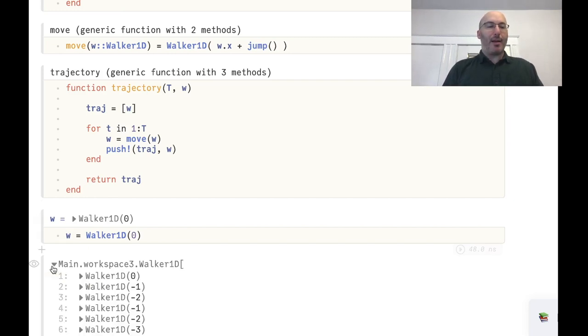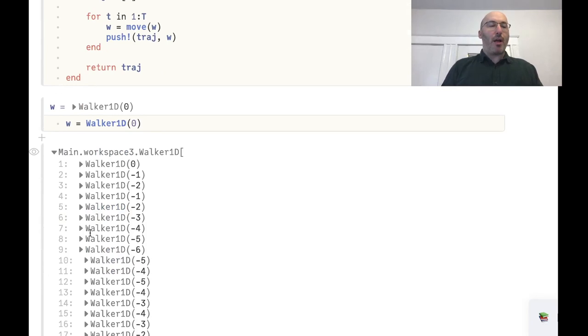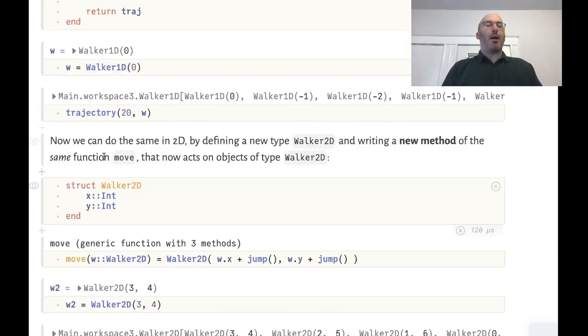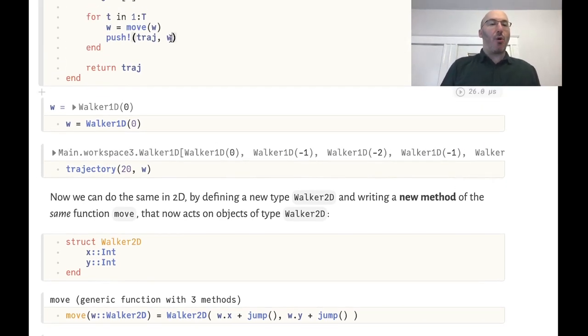...we see that indeed we have a random walk and at each step we have this Walker1d at position minus three for example. Of course if you now want to plot the trajectory you'll need to extract the position from those intermediate objects or you could just store the position of the walker instead of this whole object.